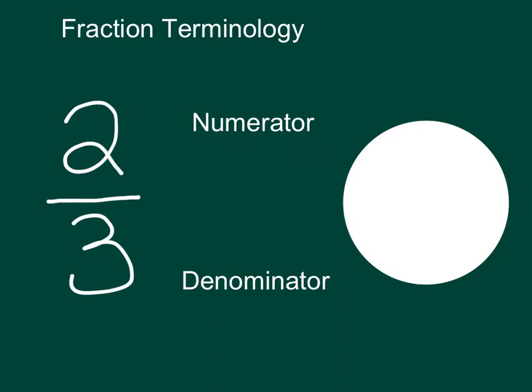Dimensional Analysis first requires us to understand fractions. We're going to start with some fraction terminology, which also means vocabulary. There are two parts to a fraction: the numerator, which is on the top, and the denominator, which is on the bottom. The way I always remember this — think denominator starts with D, just like down starts with a D, so your denominator is going to be on the bottom.